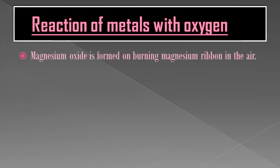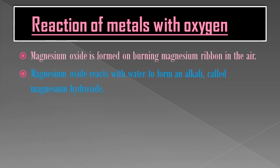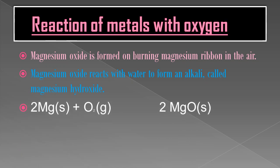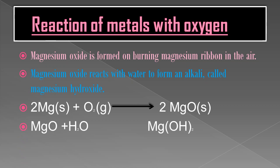Magnesium oxide is formed on burning magnesium ribbon in air — this is a well-known experiment. Magnesium oxide reacts with water to form an alkali called magnesium hydroxide. The reactions are: 2Mg + O2 → 2MgO, and MgO + H2O → Mg(OH)2. These are the reactions of metal with oxygen when the metal is burned in the presence of oxygen.